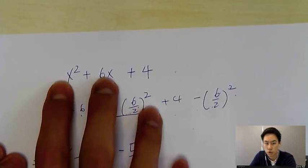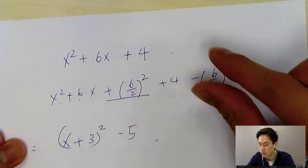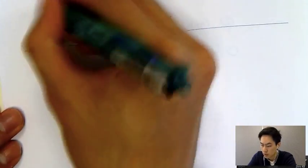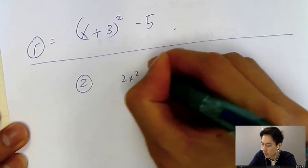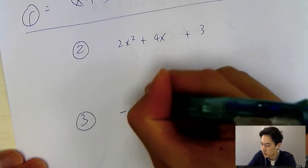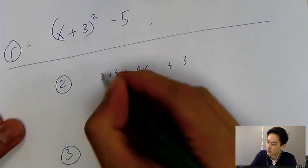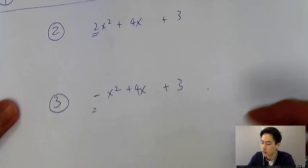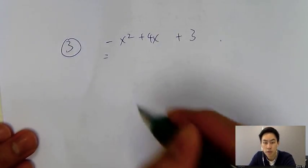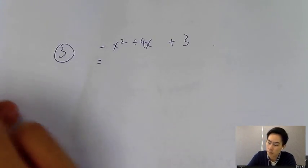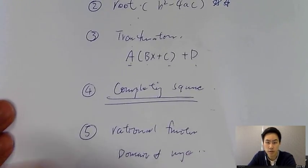Always consider the first two terms, add something in, and then subtract it to keep balance. That's type 1. For type 2, the expression would be like 2x² + 4x + 3, and type 3 would be like −x² + 4x + 3, where you have a coefficient or a negative sign in front. If you want to learn how to solve those, go to the link below at overseas.vnode.hk, choose a free trial lesson for completing the square, and I'll see you next time.